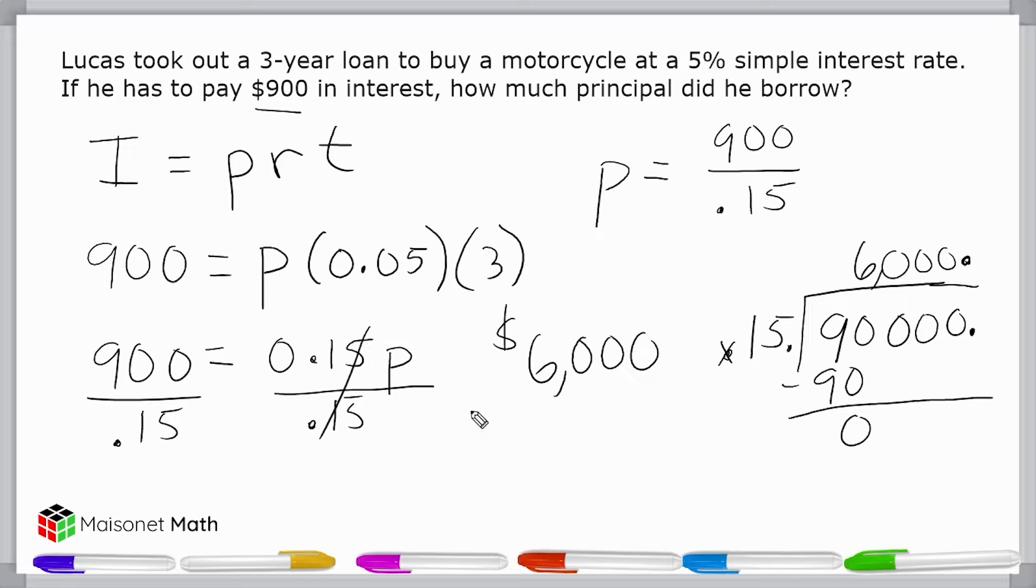So knowing the interest formula, or I equals PRT, will allow you to solve for any one of the four parts of your equation, as long as you are given the other three.